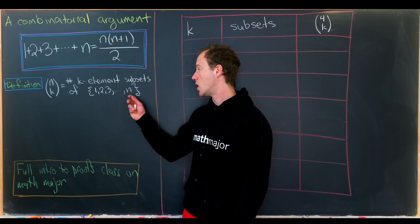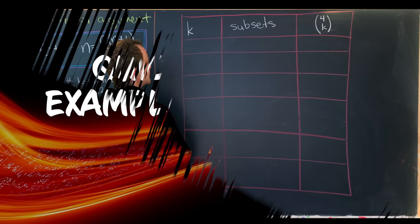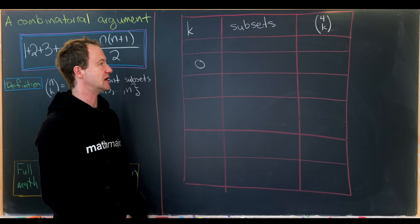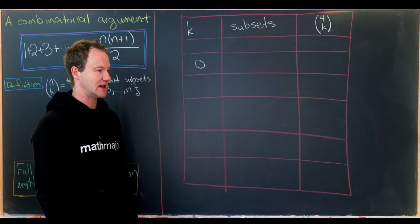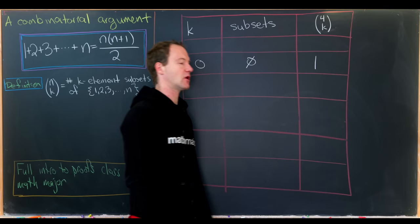Now let's look at an example where we take subsets of the set containing 1, 2, 3, 4 — so when n is equal to 4. Let's start with zero-element subsets, so k equals zero, meaning we're looking at 4 choose 0. Every set has a unique zero-element subset, which is the empty set. So 4 choose 0 equals 1, because we have a single zero-element subset.